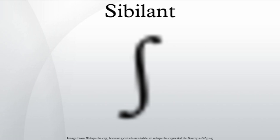Acoustics: sibilants are louder than their non-sibilant counterparts, and most of their acoustic energy occurs at higher frequencies than non-sibilant fricatives. S has the most acoustic strength at around 8,000 Hz, but can reach as high as 10,000 Hz. Esh (ʃ) has the bulk of its acoustic energy at around 4,000 Hz, but can extend up to around 8,000 Hz.